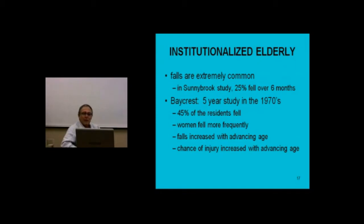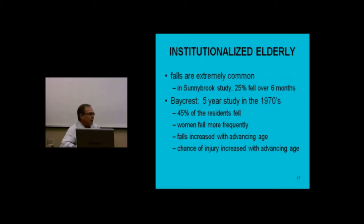People fall and their families put them in nursing homes for safety. Gravity still works in nursing homes — the highest rate of falls is in nursing homes. It's not because nursing homes cause falls; it's because the frailest people end up there. You can set up proper programs in nursing homes to reduce the risk of falls, but not all nursing homes have them. Studies showed once again: women fall more frequently, the older you are the more likely you are to fall, and the older you are the more likely you are to have a serious injury.